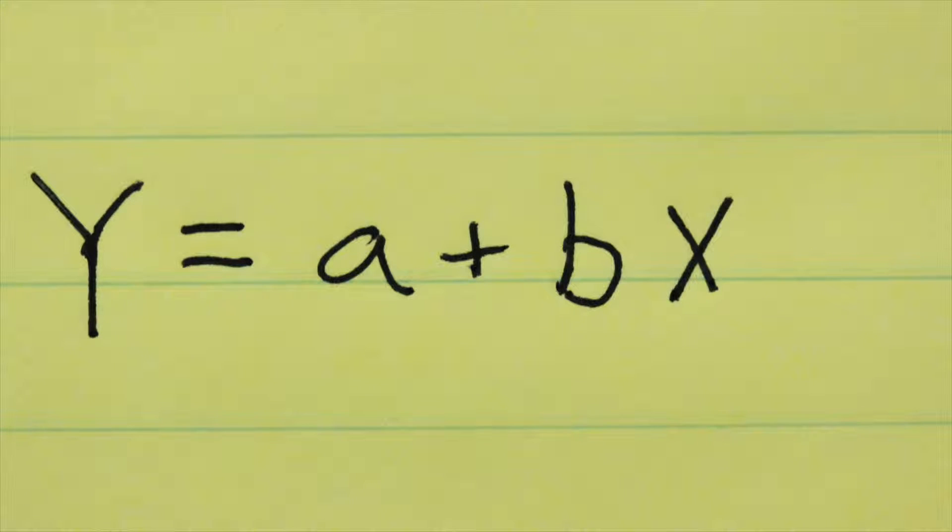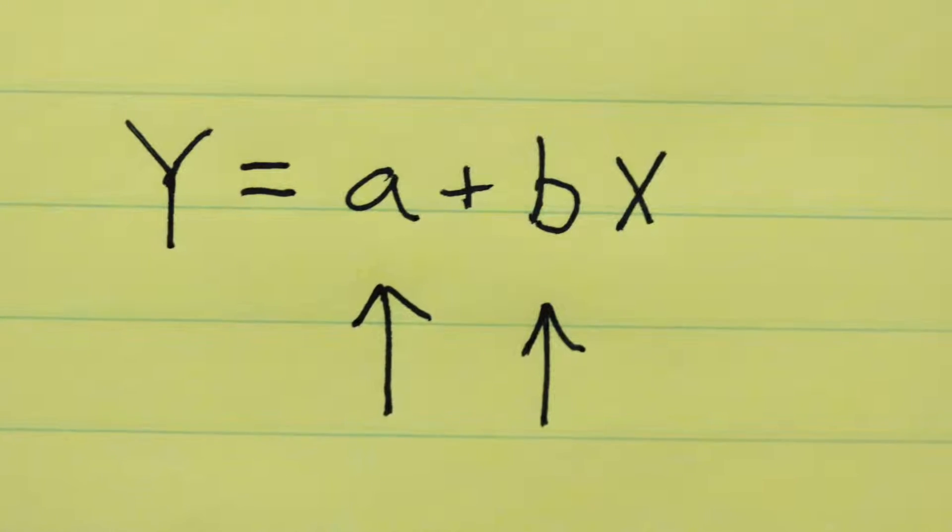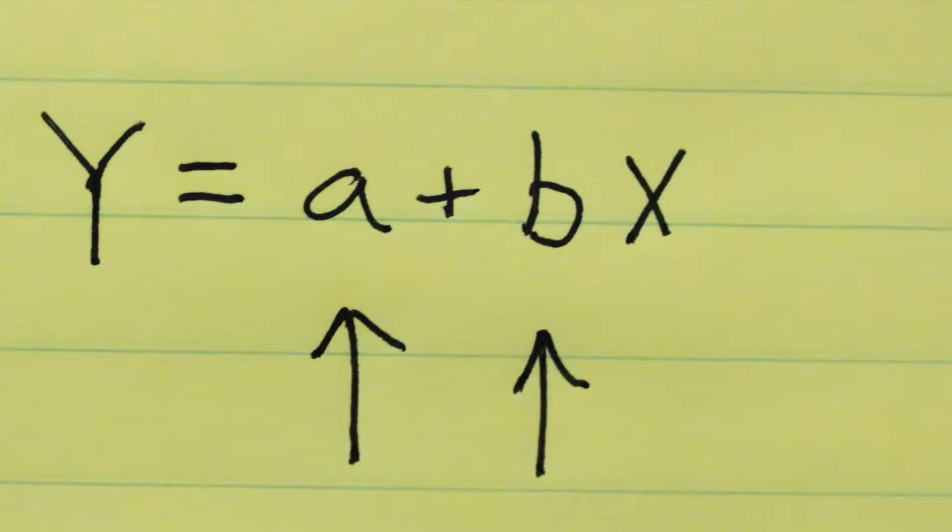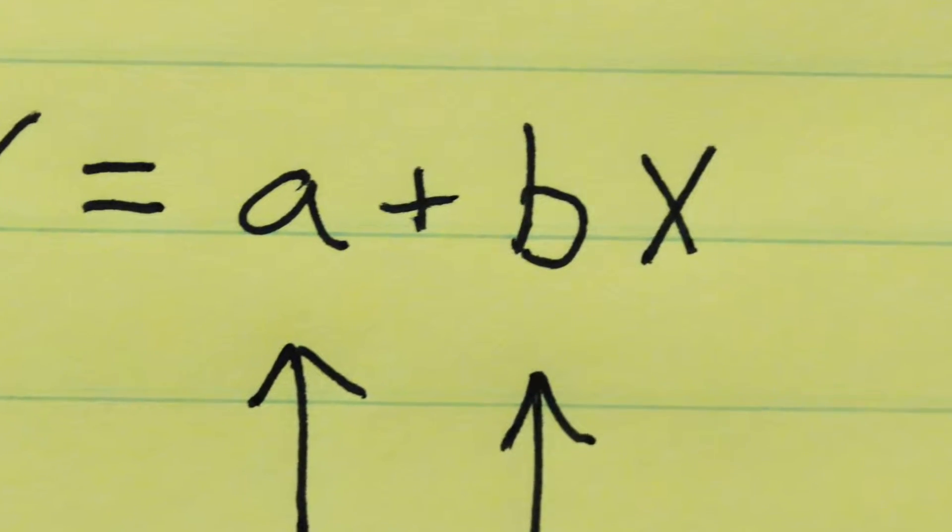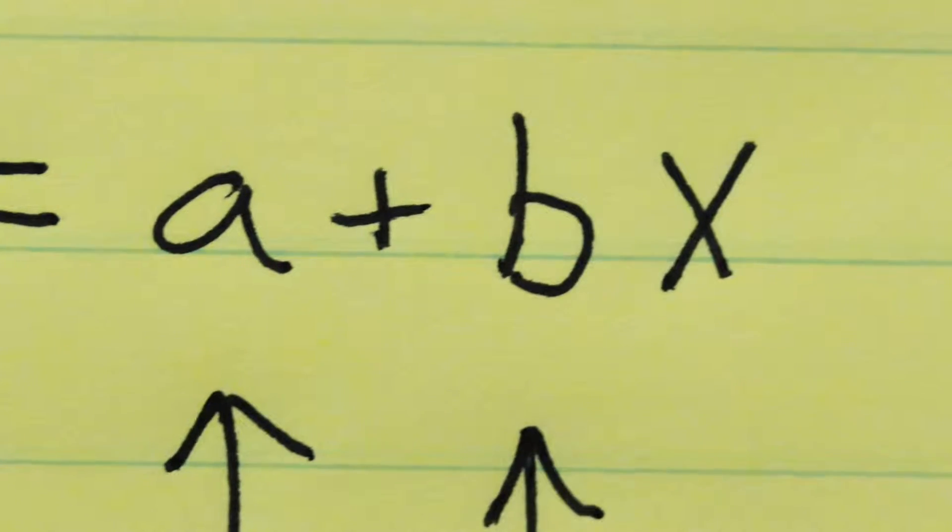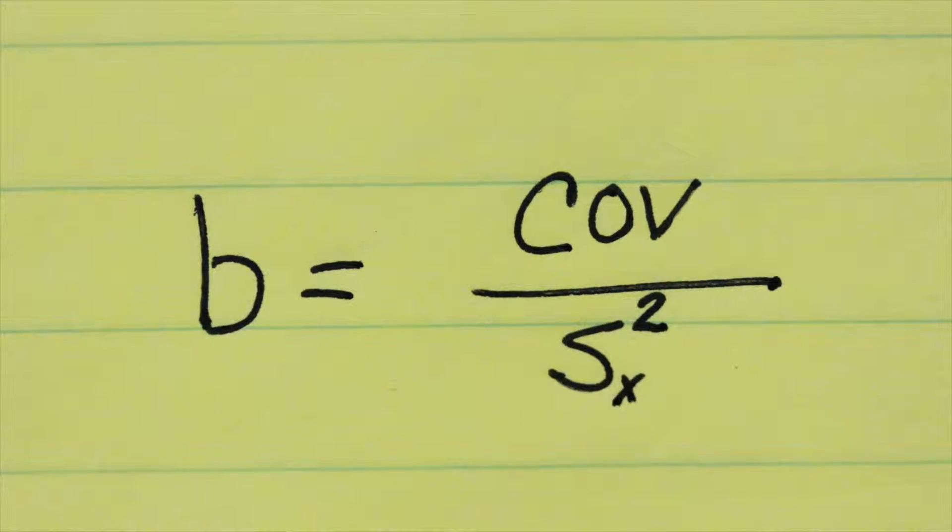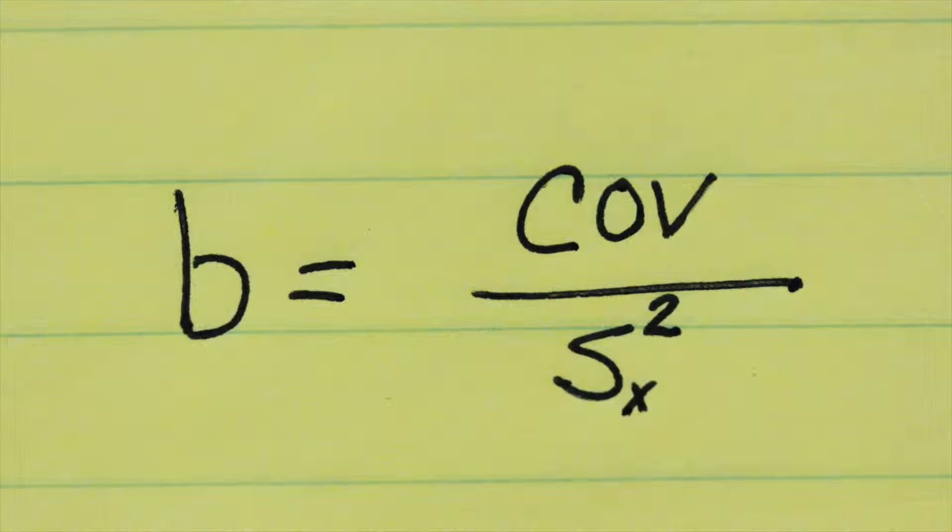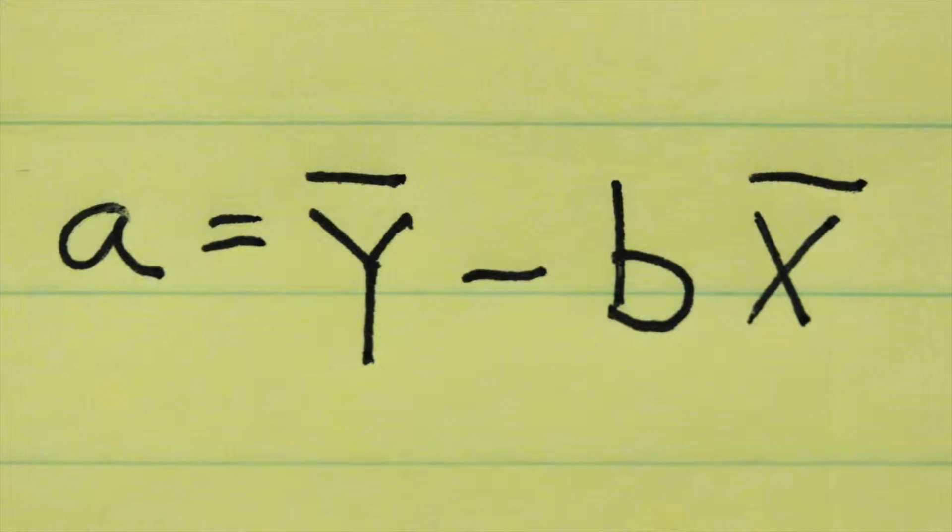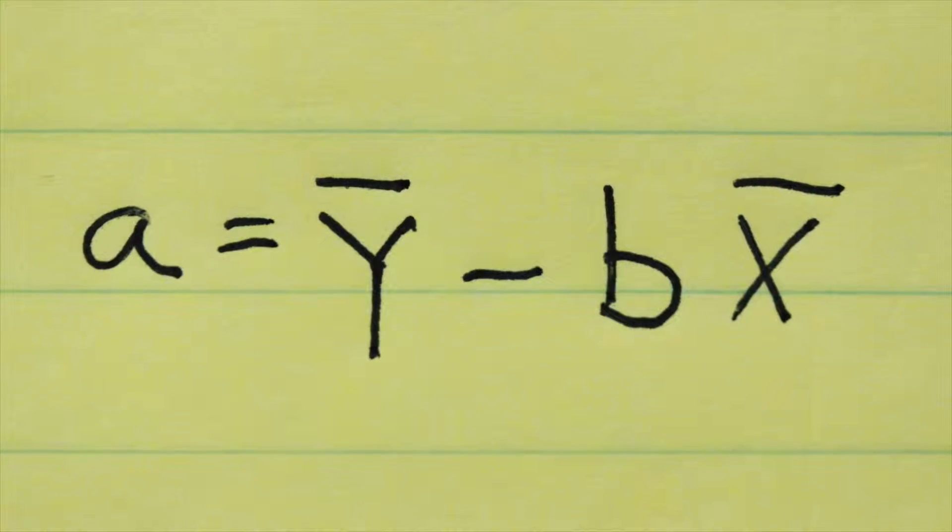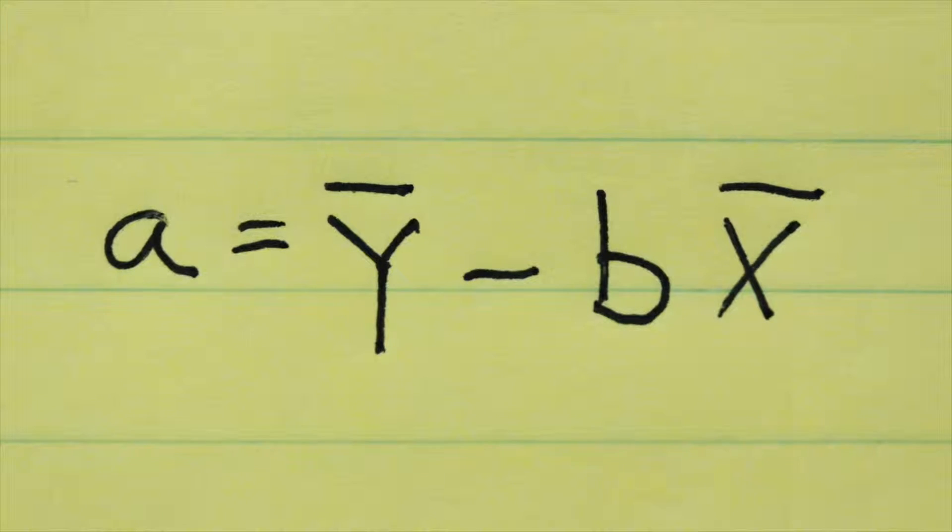For regression, we need to estimate two values, the value for a and the value for b. And we have formulas for those. The formula to estimate b, the slope, is the covariance divided by the variance of x. And the formula for a is the average of y minus b times the average of x.